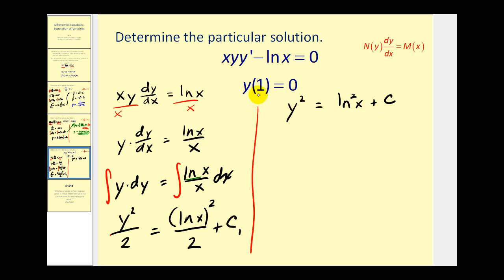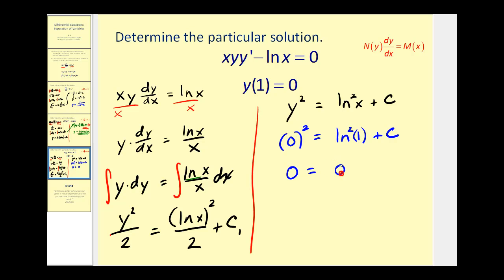We're also given that y of one equals zero, so when x is one, y is zero. Let's find the particular solution. Substituting in: natural log of one is zero, zero squared is zero, so c equals zero. Our particular solution is y squared equals natural log x, quantity squared.